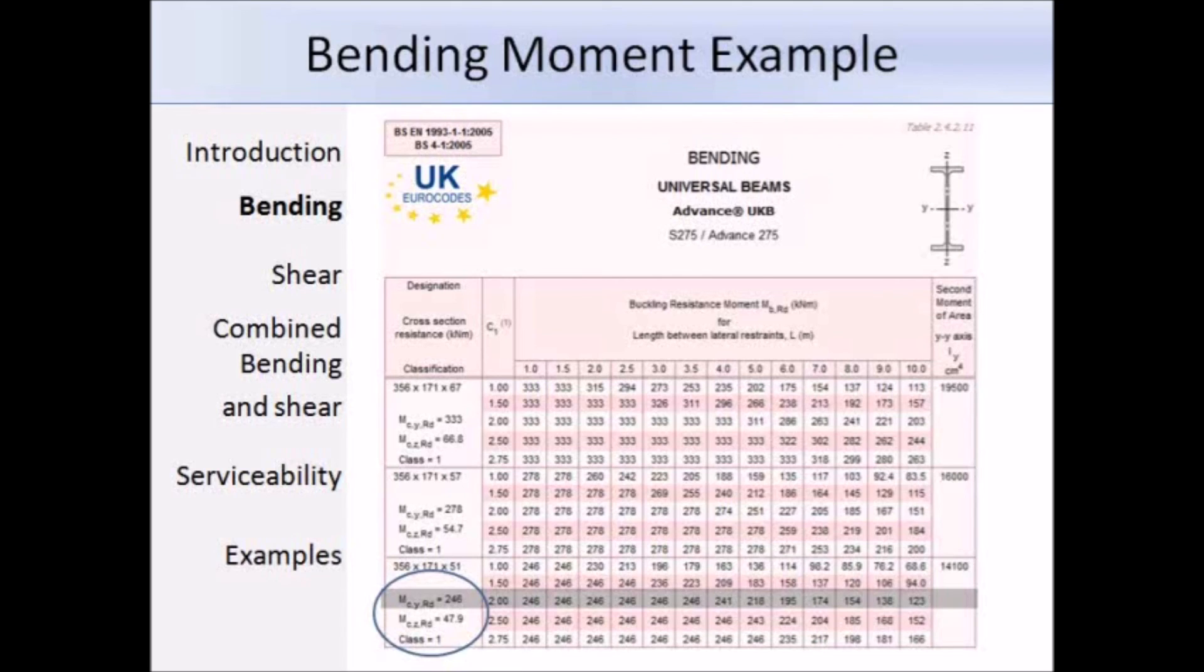You will see two values for Mc,Rd: one for the major axis Y and one for the minor axis Z. In the example we were dealing with the major axis, so that's Y. If we compare the value in the blue book Mc,y,Rd, which is 246 kNm, to our hand calculation result of 246.4 kNm, you will see that the answers are practically the same. I've just included this slide to show you that the blue book is a valuable resource and it can save you a lot of time compared to working out the design bending resistance by hand. This just concludes this section on restrained beams. Thank you.